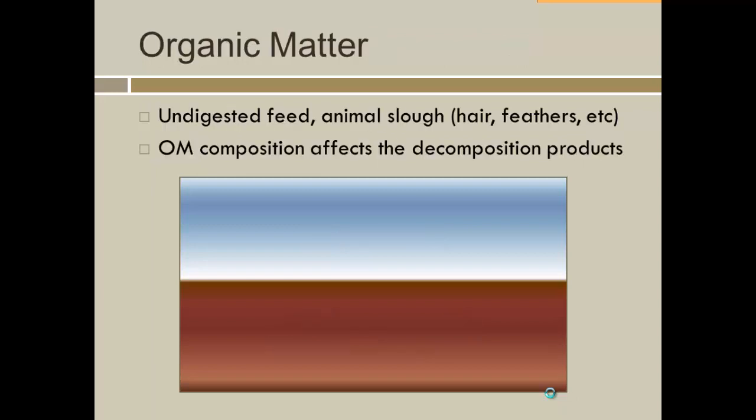If we take a look at what happens to organic matter in aerobic versus anaerobic systems — the composition of what's coming from animals really does have an effect on the decomposition products you'll see. If it's aerobic with lots of oxygen around, you're going to have as complete a breakdown as possible, where organic matter goes to CO2, nutrients, and water.